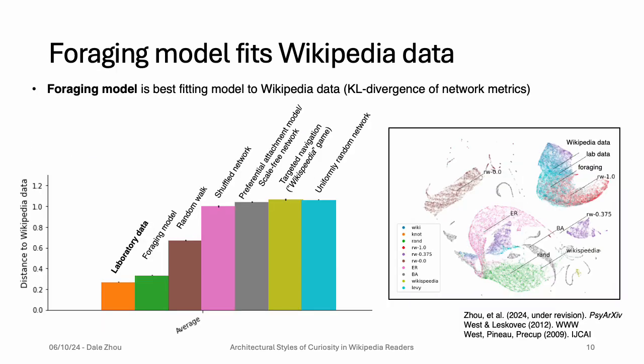Importantly, the distance from the laboratory data to the mobile app data was also smaller than several null models. The takeaway is that the laboratory data, compared to alternative models, is closest to the mobile app data. Specifically, we compared the laboratory data to a foraging model inspired by how animals forage for resources, a simple random walk on the hyperlink network, a shuffled version of everyone's network, a scale-free network produced by a preferential attachment or rich-get-richer model, the Wikispedia game, and a uniformly random network.